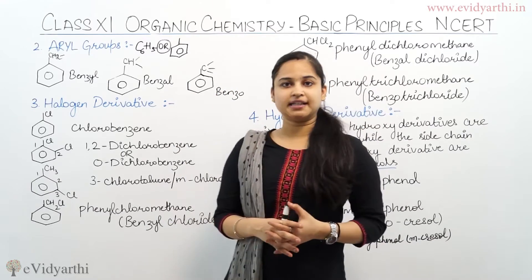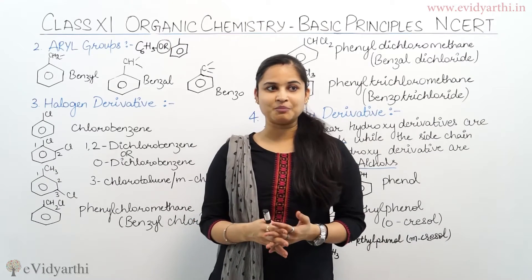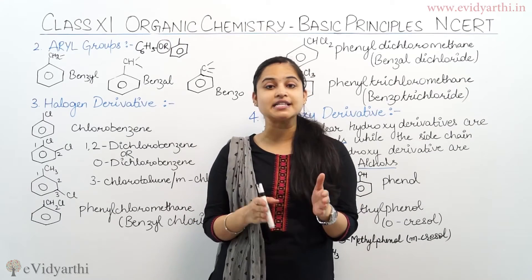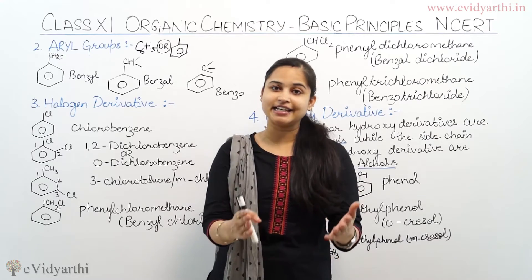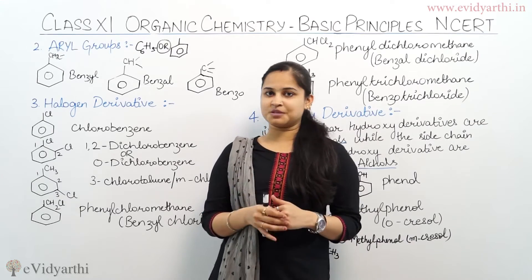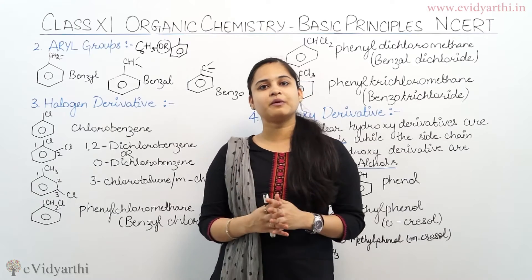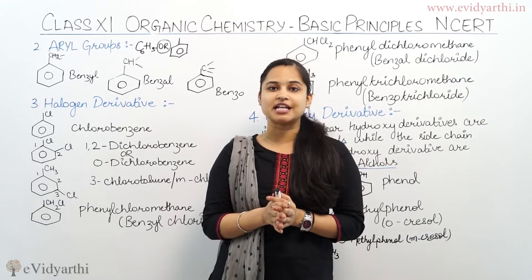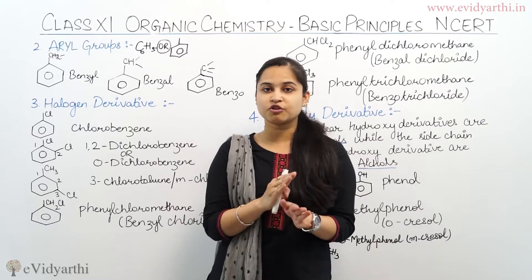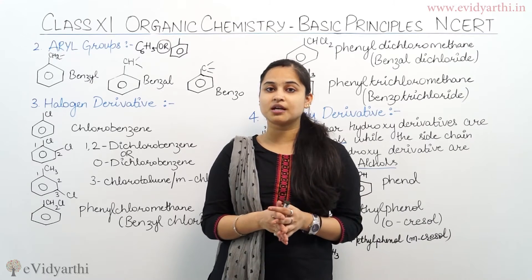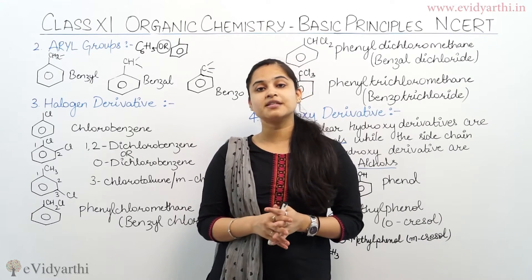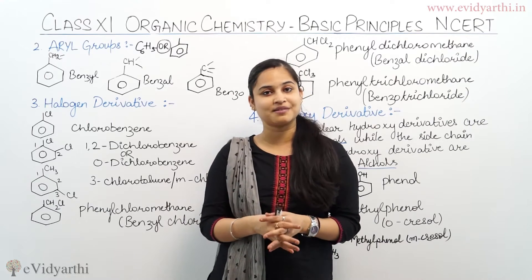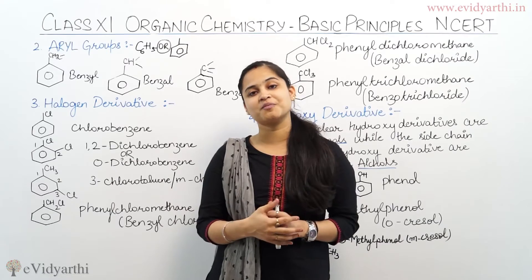Aryl groups — it's about the teams. For example, in aliphatic compounds, CH4 gives CH3 when one hydrogen is removed, and we call that a methyl group. The same case applies to aromatic compounds. In aromatic compounds, I use benzene. When I remove one hydrogen from C6H6, I get C6H5. That is what we want — C6H5.